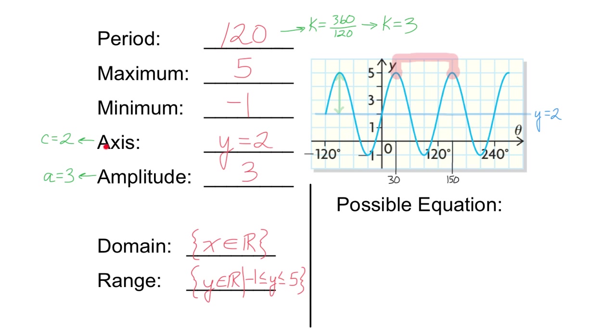The central axis, c for central axis, is 2. So I know my c value. And a for amplitude. Amplitude is 3. That means a is 3.